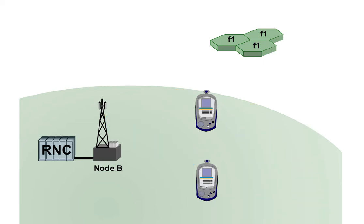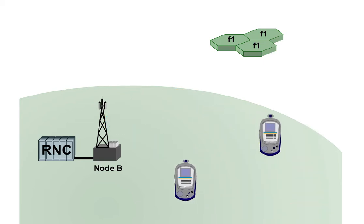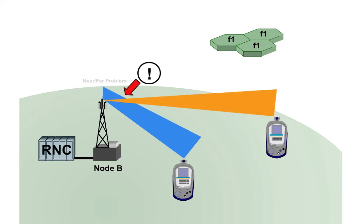If two user equipments at different distances to the Node B transmit with the same power, the user equipment nearby will drown out the weak signal from the distant user equipment. This is also called the near-far problem.